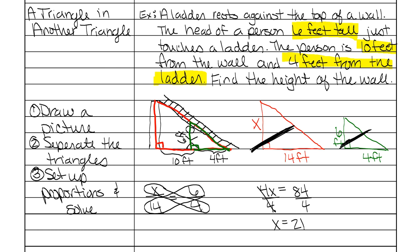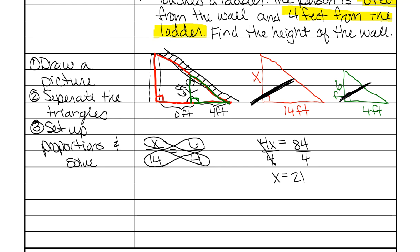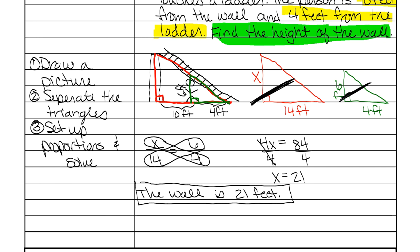But you need to understand what that means and go back to the problem. So it says right here, find the height of the wall. So that means that the wall is 21. And don't forget your feet. That's your answer. Now I'll flip her paper over to the back and we will go over the next two problems.